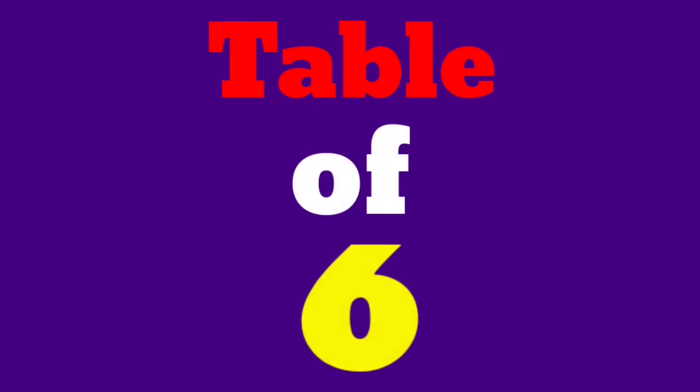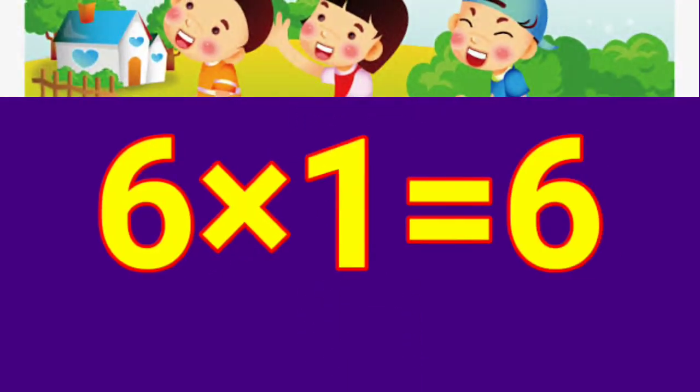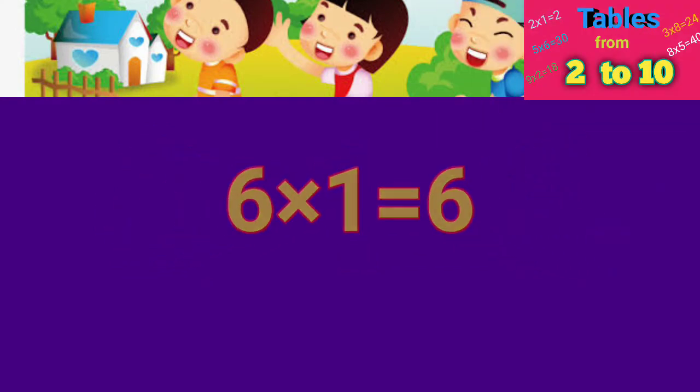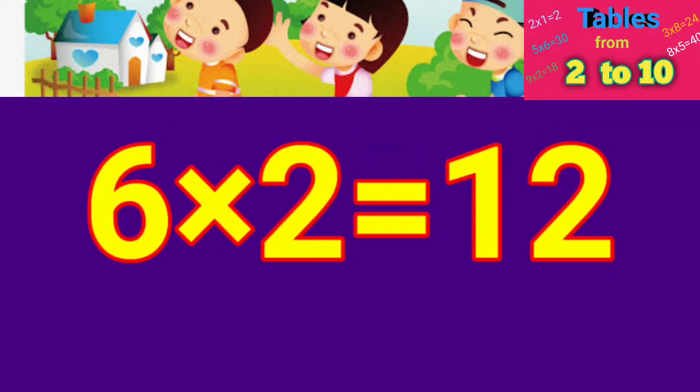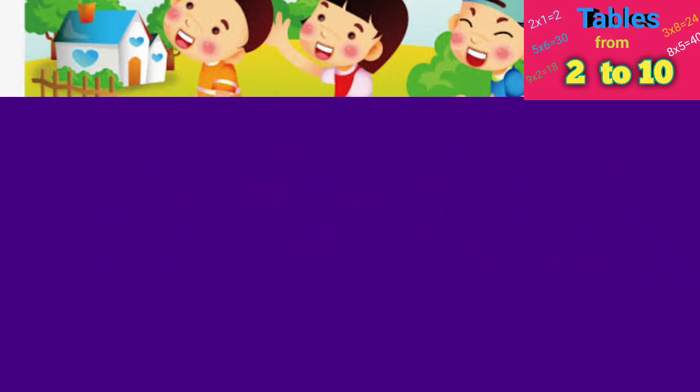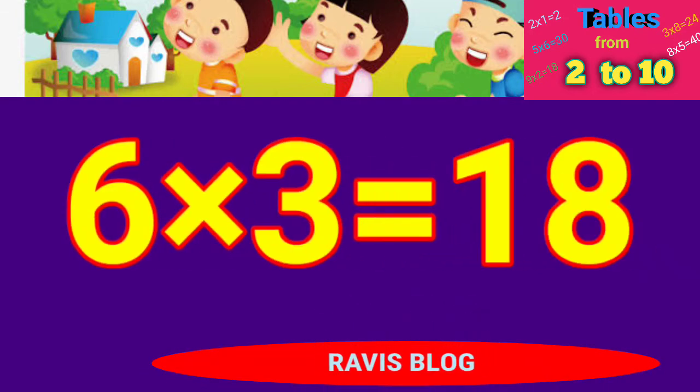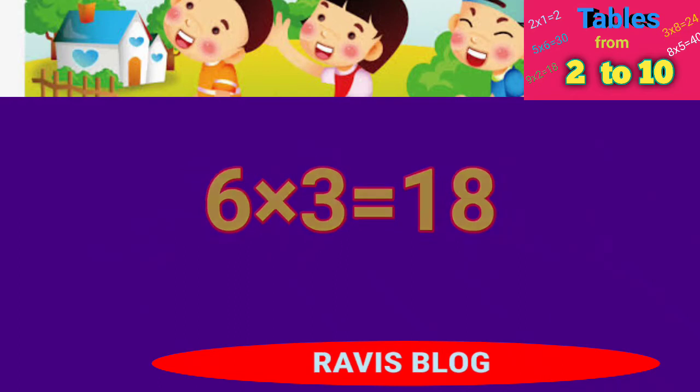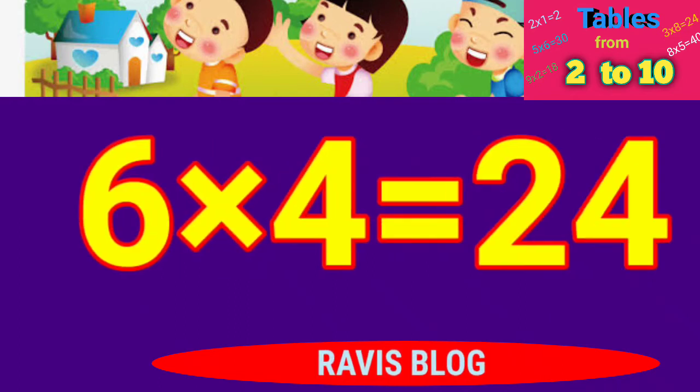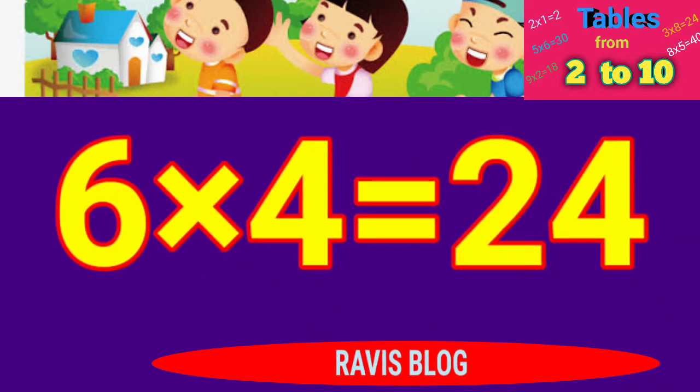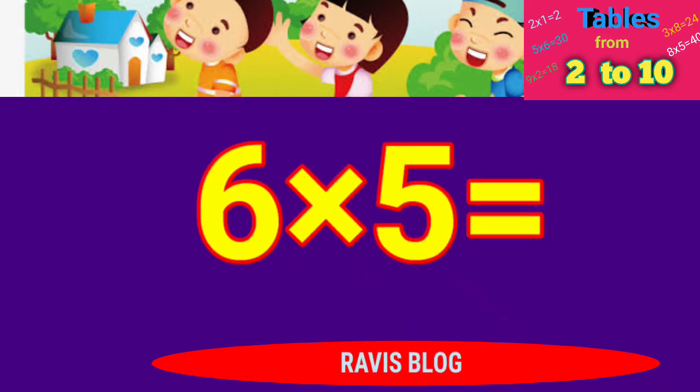Table of 6: Six one's are six, six two's are twelve, six three's are eighteen, six four's are twenty-four, six five's are thirty.